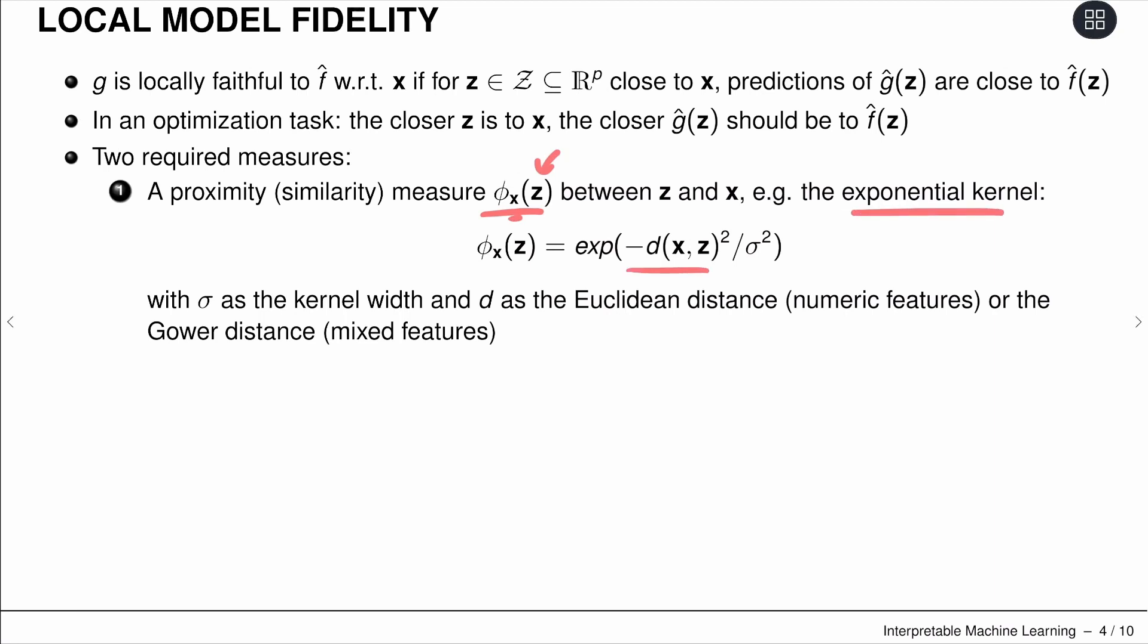squared and divided by some kernel width sigma, then taking the exponential. If you have numeric features, we can use Euclidean distance, or if we have mixed feature space, there's also the Gower distance which extends the idea to different feature types.